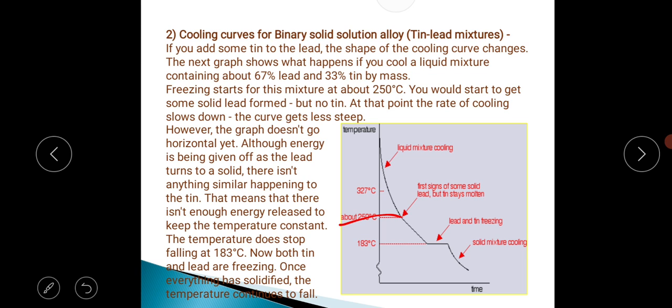But note at that point the rate of cooling slows down - the curve gets less steep. However, the graph doesn't go horizontal yet. Although energy is being given off as the lead turns to solid, there isn't anything similar happening to the tin. That means there isn't enough energy released to keep the temperature constant. The temperature does stop falling at 183 degrees Celsius. Now both tin and lead are freezing. Once everything has solidified, the temperature continues to fall.